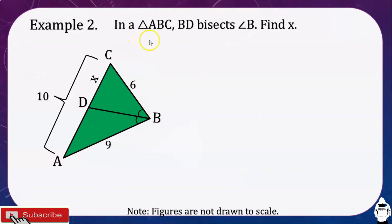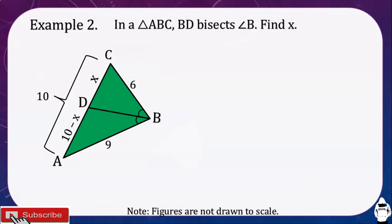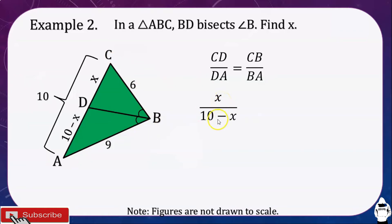Example number 2: In triangle ABC, BD bisects angle B — find X. We need to find segment AD first. Given: AB is 9, BC is 6, CD is X, and AC is 10. To find AD, we subtract: AD equals 10 minus X. Then our proportion is CD over DA equals CB over BA. By substitution, X over (10 minus X) equals 6 over 9.